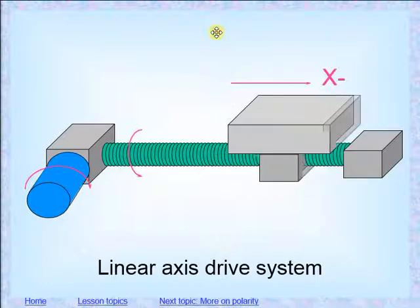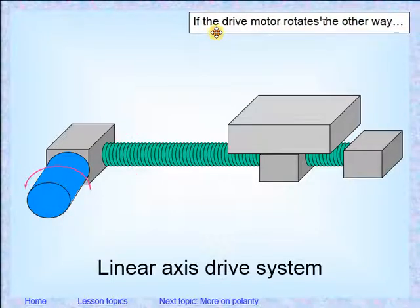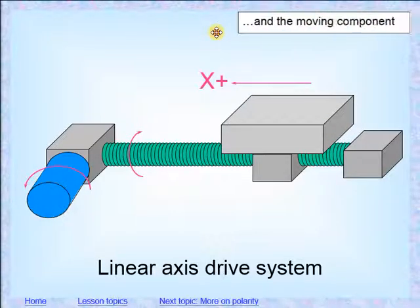There's a little animation of the table moving this way, and then if it would reverse direction, we will see that it goes the other way. It's pretty obvious, but it says X positive even though the table is moving to the left, because the tool would be moving to the right.